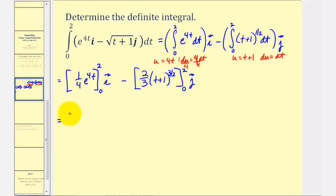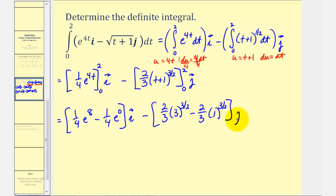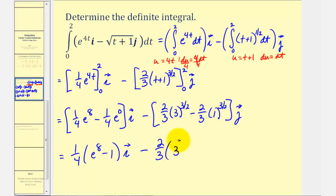Now we'll evaluate. We'll first substitute two for t, so we'll have one-fourth e to the eighth — four times two is eight — minus one-fourth e to the zero, times i. And then here we'll have two-thirds times three to the three-halves, minus two-thirds times one to the three-halves, times j. We can factor out one-fourth; e to the zero is one, so we'll have one-fourth times the quantity e to the eighth minus one, times i, and then minus two-thirds times the quantity three to the three-halves minus one, times j.